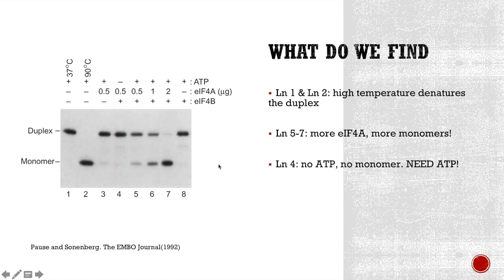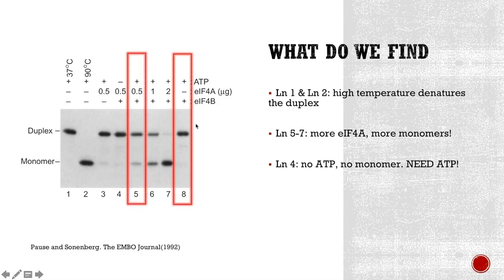How about EIF4B? Let's compare lane 8 and lane 5. The only difference is that lane 8 does not have EIF4A, while lane 5 does. And we don't see a band on the monomer position, which means EIF4B alone, even at the presence of ATP, does not have helicase activity.